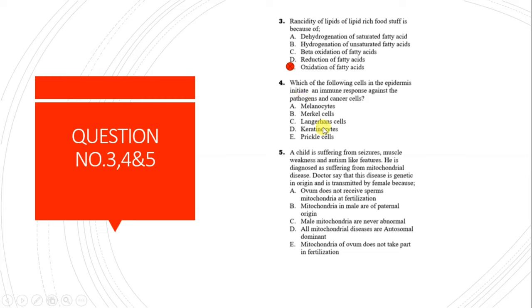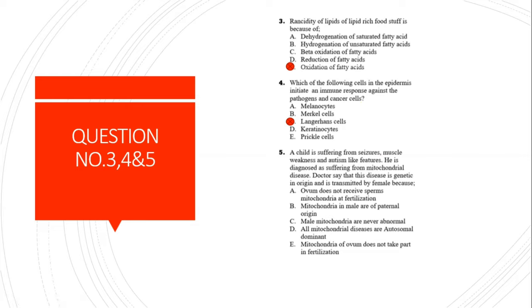Question 4: Which cells in the epidermis initiate an immune response against pathogens and cancer cells? Options include melanocytes, Merkel cells, Langerhans cells, keratinocytes, and prickle cells. The answer is Langerhans cells, because they are histiocytes or part of the reticuloendothelial system - tissue macrophages present in the skin that phagocytose antigens and cause an immune response.